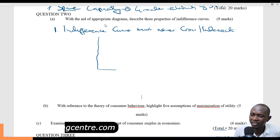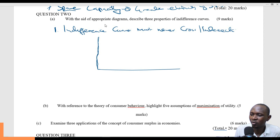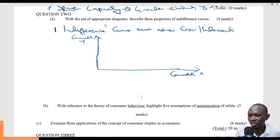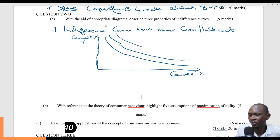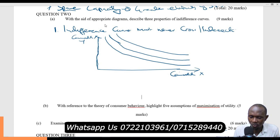When we plot an indifference curve, we assume two sets of commodities and different combinations. We can talk of commodity X and commodity Y on the Y-axis. Individuals have bundles of how they can have their preferences. This is roughly how the indifference curves will run with the different bundles. That is how the indifference curves look like.